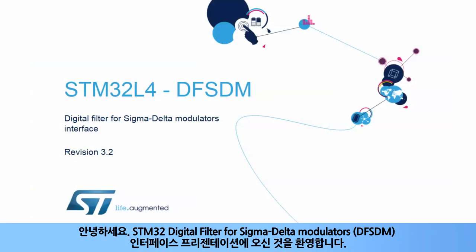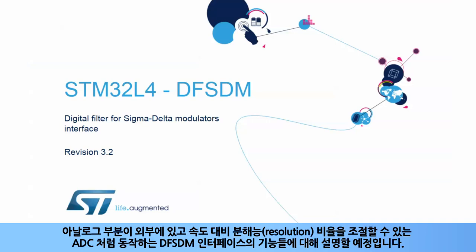Hello, and welcome to this presentation of the STM32 digital filter for Sigma Delta Modulators interface. The features of this interface, which behaves like an ADC with an external analog part and configurable speed versus resolution ratio, will be described.